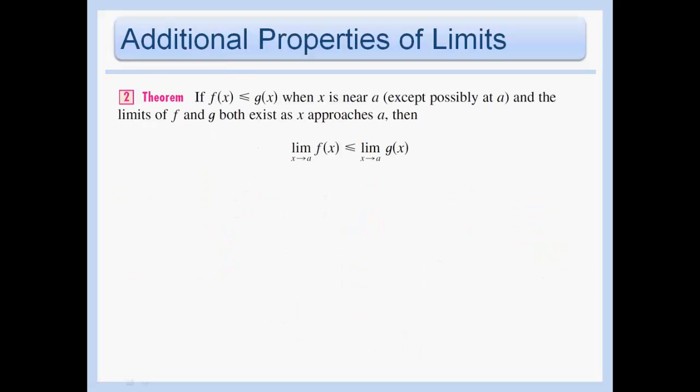Here's one more additional property. It looks confusing at first, but when we look at the picture it becomes obvious. If f of x is less than or equal to g of x when x is near a, and the limits of both f and g exist as x approaches a, then the limit of f of x as x approaches a is less than or equal to the limit of g of x. Graphically: if the f function is below the g function, then the limit of f is also below the limit of g.